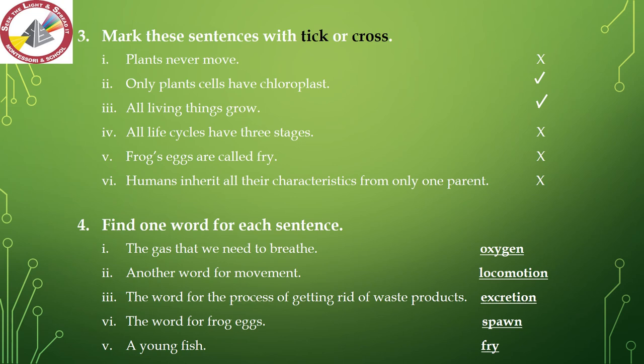Number 1 — plants never move. This statement is wrong — plants do move, so you have to put a cross. Number 2 — only plant cells have chloroplasts. This organelle is present only in plant cells, so this statement is correct — put a tick. Number 3 — all living things grow. Only living things can grow, so this statement is correct — put a tick.